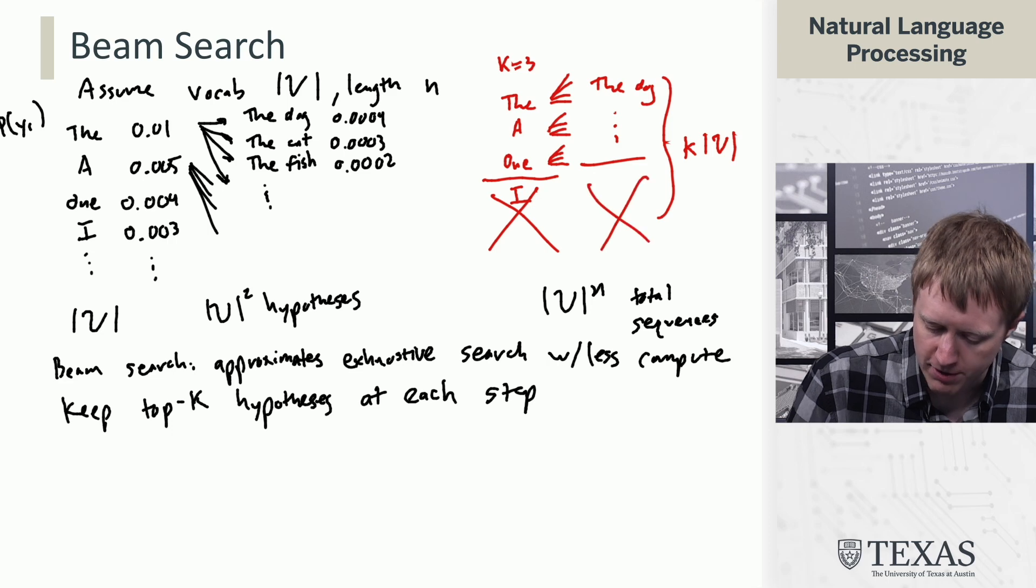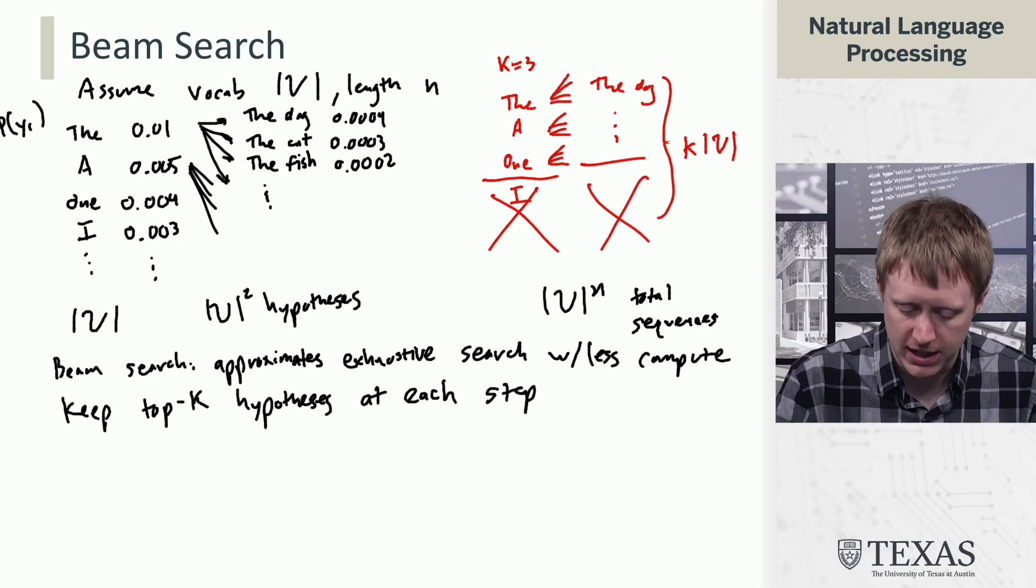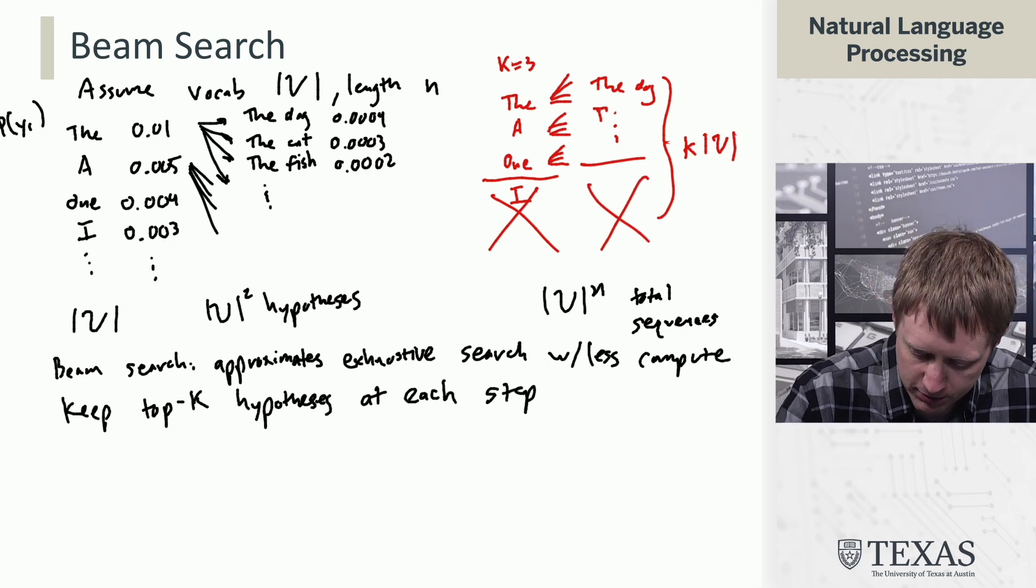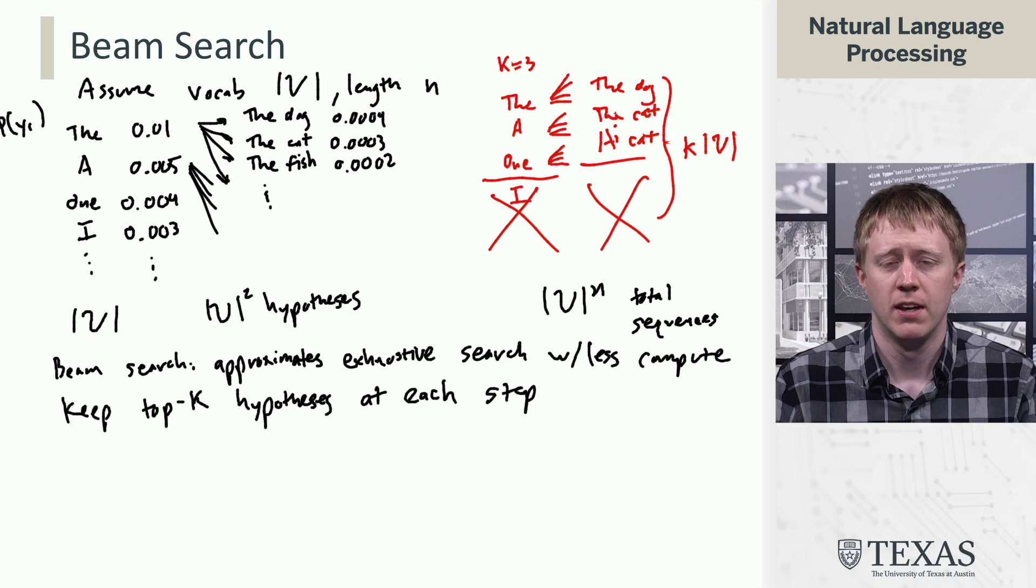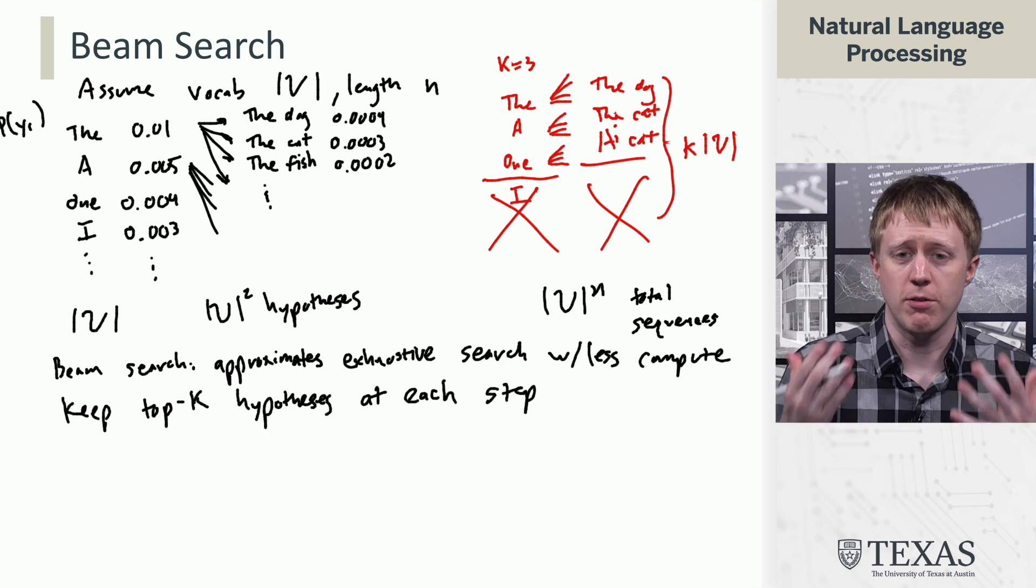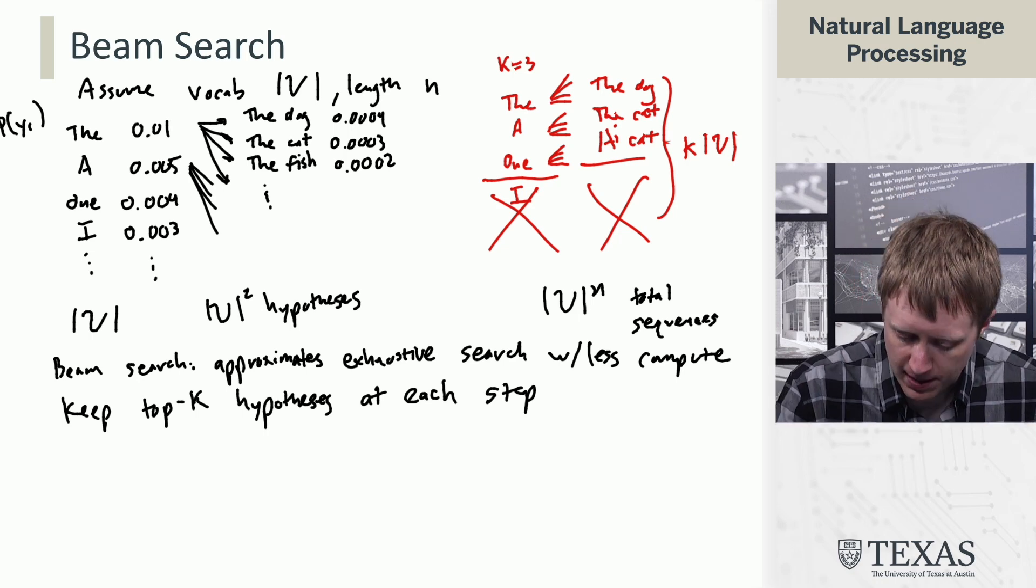But once again, we're going to chop off most of that. We're only going to keep around the top things, which are maybe the dog, the cat, and let's say a cat or something like that. So we end up with a relatively small number of options at each time step.